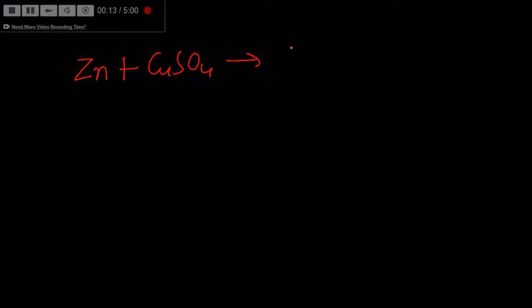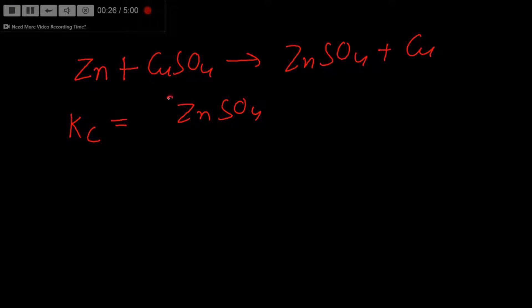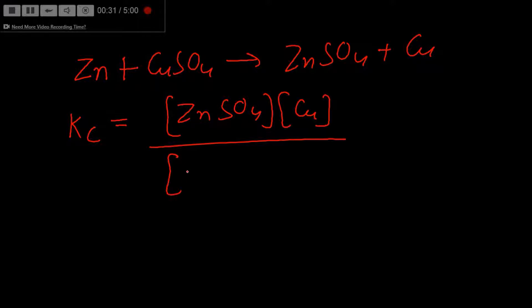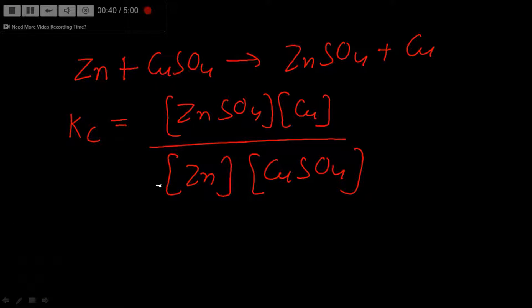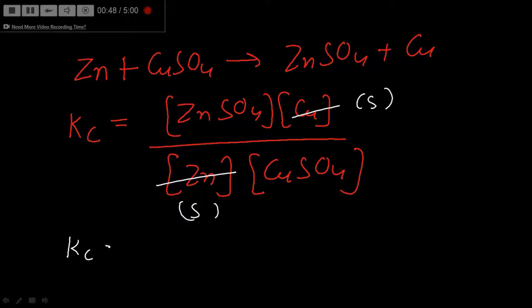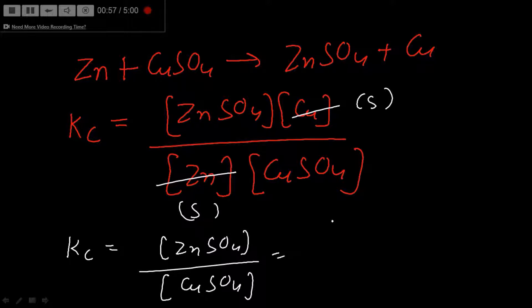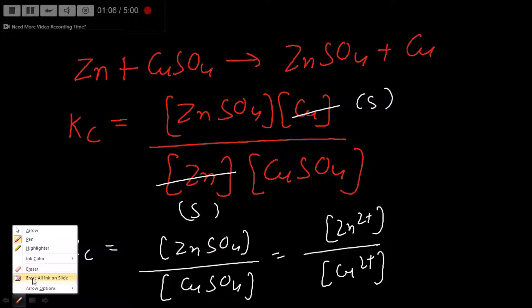Now consider the actual reaction: Zn + CuSO₄ → ZnSO₄ + Cu. The equilibrium constant Kc for this reaction would involve the concentrations, but since Zn and Cu are solids, we ignore them. So Kc simplifies to [Zn²⁺] / [Cu²⁺]. This means the logarithmic term in the Nernst equation is essentially ln(Kc).